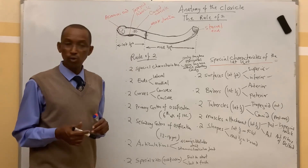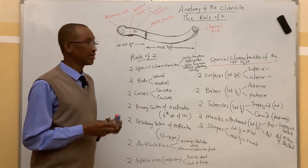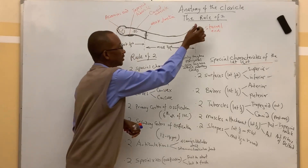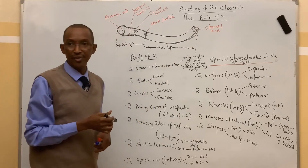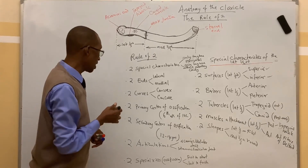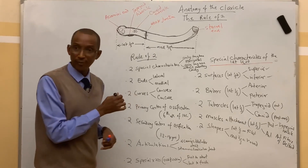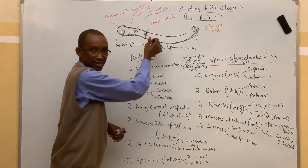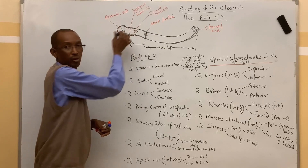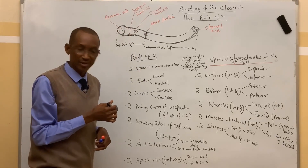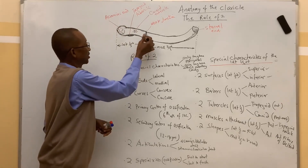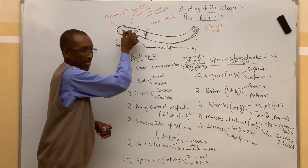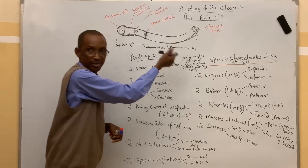The clavicle has two ends: the acromial end, which lies on the lateral side, and the sternal end, which lies on the medial side. It also has two curves. The middle two-thirds is convex forward, and the lateral one-third is concave forward. So the concavity is forward at the lateral one-third and the convexity is forward at the middle two-thirds.